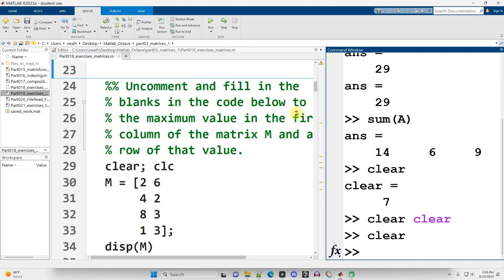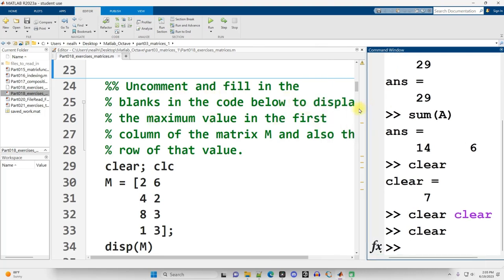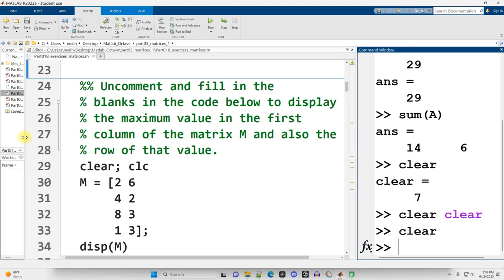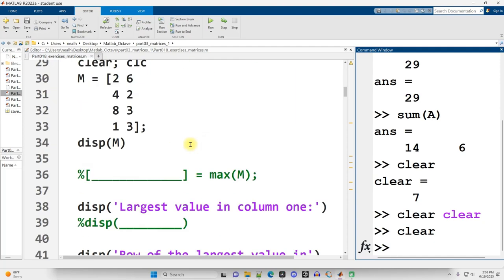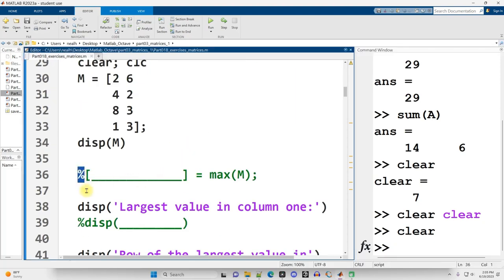Uncomment and fill in the blanks in the code below to find the max to display the maximum value in the first column of the matrix M and also the row of that value. All right. So I'm going to uncomment this line right here. And the idea is that in these square brackets, I need to define two variables. Now, I prefer to use good variable names. So I'm going to name my first variable maxes.